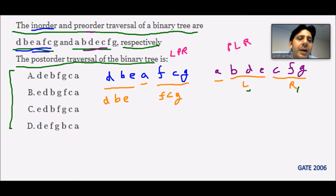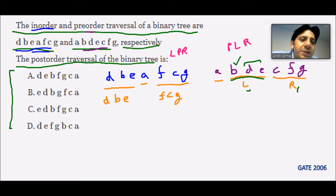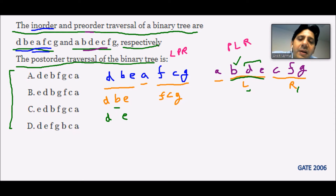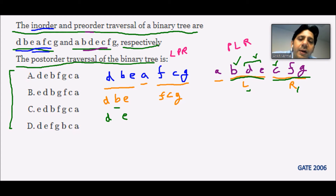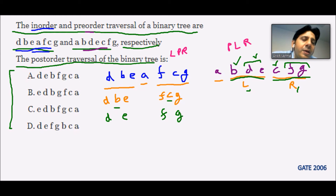In the left subtree from the pre-order, B is coming first, so B is the parent of D and E. D and E are remaining as children of B. In the right subtree, C appears first in the pre-order, so C is the parent. Matching C in the in-order, F and G are the children of C.